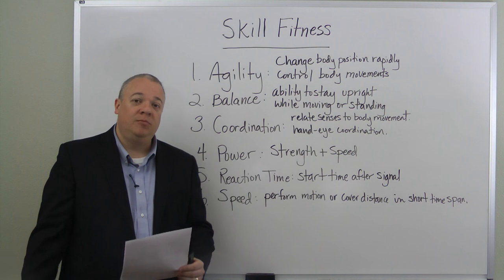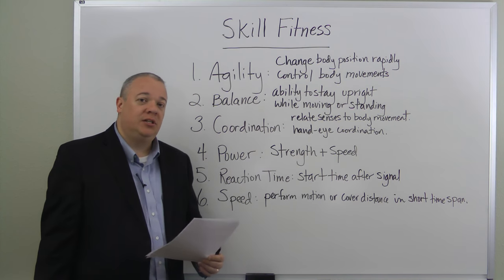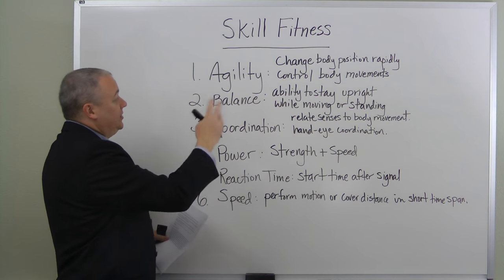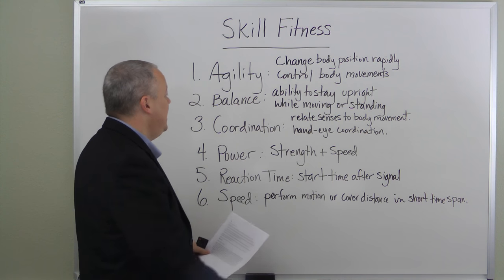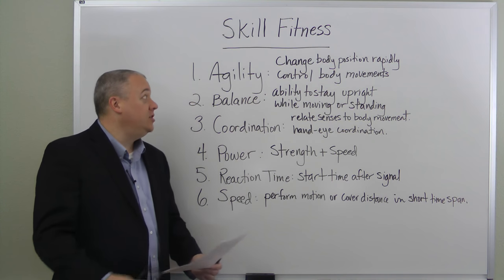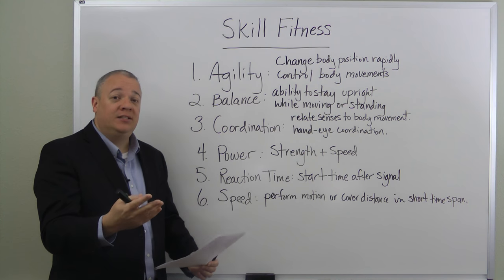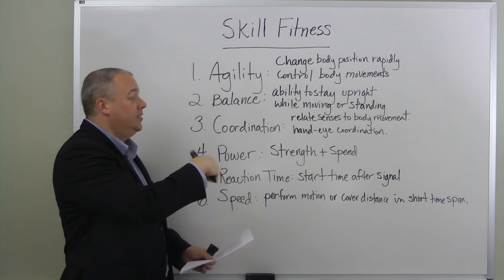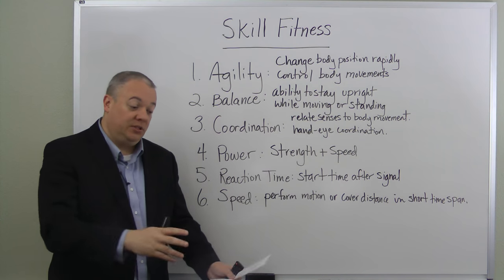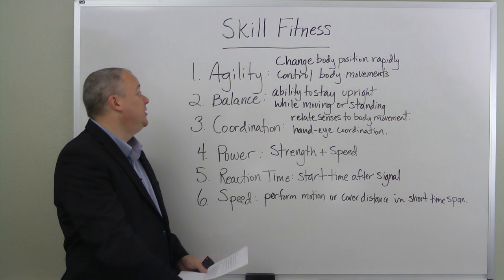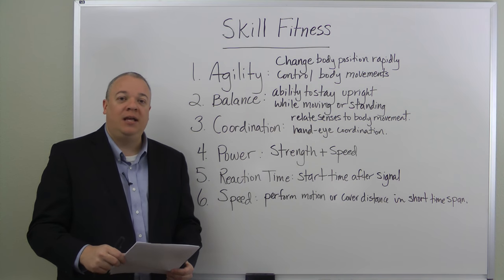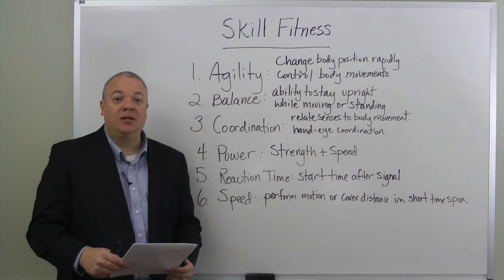Finally, speed — we said power equals strength plus speed. Speed is the ability to perform a motion or cover a distance in a very short period of time. For motion speed, think of a boxer's ability to throw a quick jab; for covering distance, think of a sprinter or a football player's 40-yard dash time. These are the six skill fitness categories: agility, balance, coordination, power, reaction time, and speed. Evaluating these reveals areas for improvement, and you can focus on specific categories when putting together a training regimen.